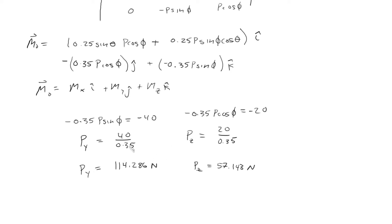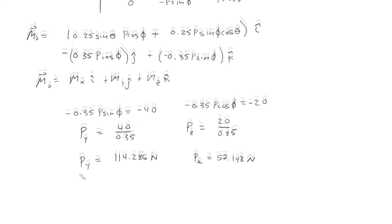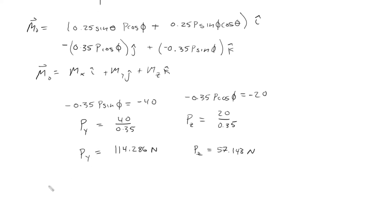Now I'm going to rewrite the x component of the moment in this fashion in terms of Py and Pz. So what I'm going to do here, this is going to be 0.25 sine theta times Pz plus 0.25 cosine theta times Py.